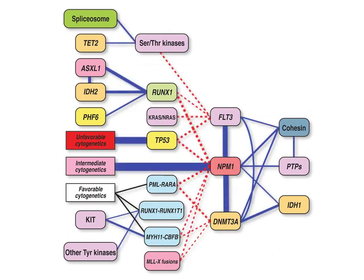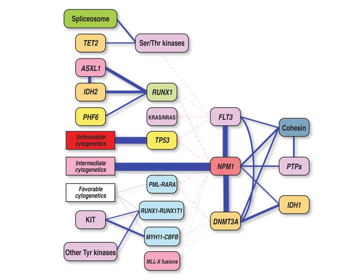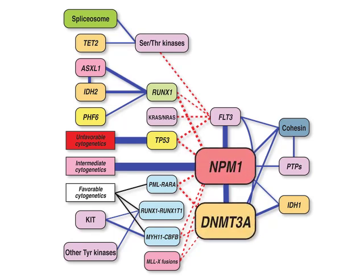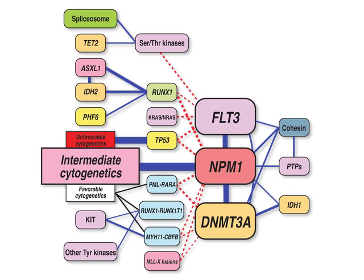Pairs of genes or gene sets in which mutations are mutually exclusive are indicated by red dotted lines. Pairs of genes in which mutations tend to co-occur and potentially synergize are indicated by blue lines. The thicker the line, the more prevalent the co-occurrence of mutations. One of the most prominent associations is between NPM1, DNMT3A, and FLT3. Mutations in these genes tend to occur in tumors with an intermediate-risk cytogenetic profile, and patients with all three mutations may have a new subtype of AML.